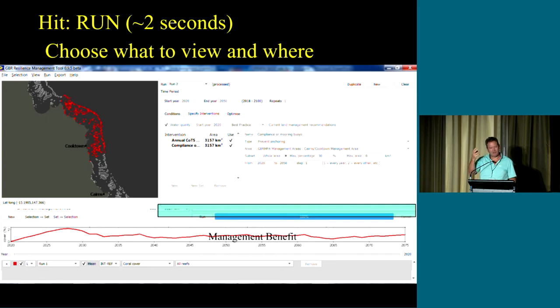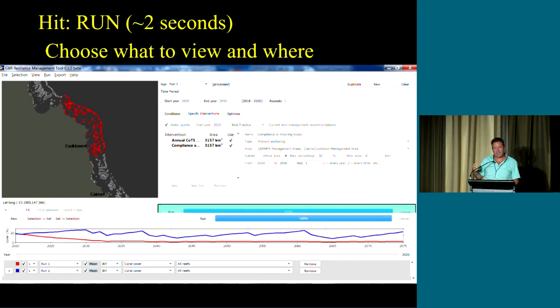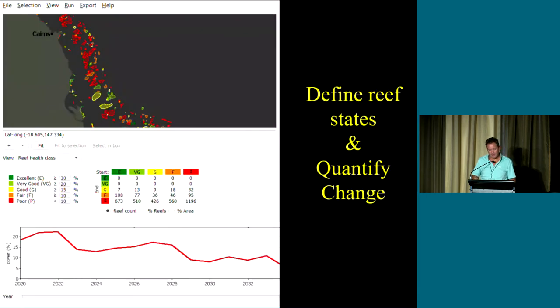This is now measuring on average across that region of interest. This is how the management benefit changed over time. Of course you might instead want to look at the management benefit on individual reefs. You can pick those too. And of course you can then run different scenarios, plot them on the same graphs and compare the outcomes and use this as more of an exploratory tool to find out what sorts of interventions work well together, what not so much.